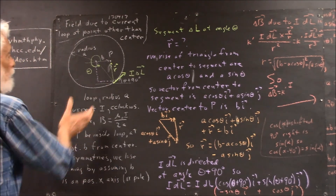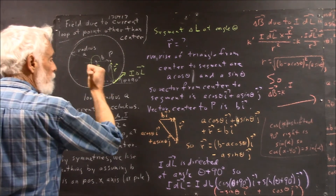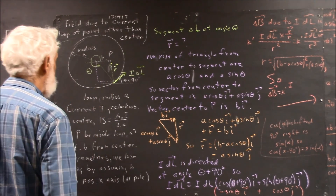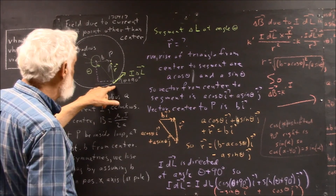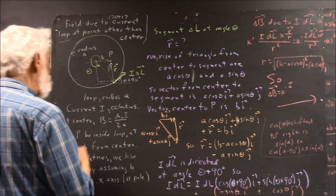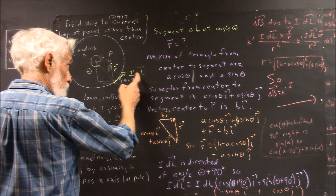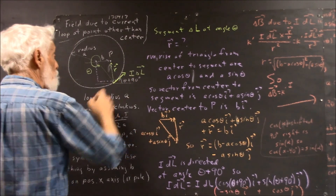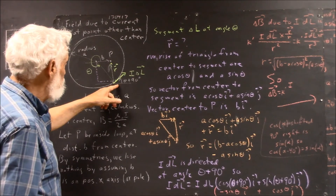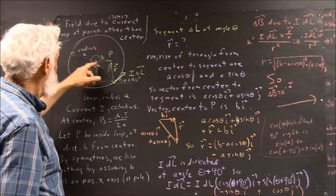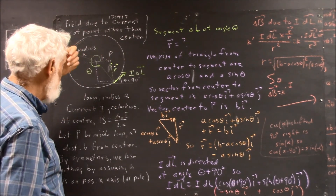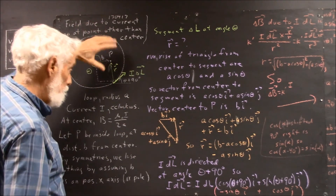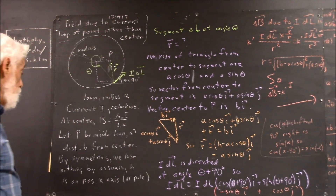If you think about the I delta L cross R, you see that the field at any point is always going to come out of the loop — the field due to any segment is always going to come out of the loop. So we posit a segment I delta L, and we ask ourselves what contribution this makes to the field at a point at distance B from the center. We put this point on the positive x-axis, and we can do that because of the rotational symmetry of the entire picture.